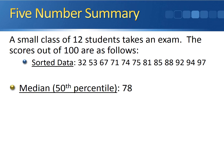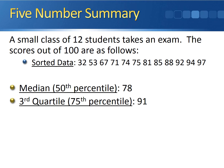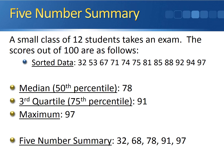The median, which is the 50th percentile, is 78. The third quartile, which is the 75th percentile, is 91. The final number in our five-number summary is the maximum, which is 97. So our entire five-number summary is: minimum 32, first quartile 68, median 78, third quartile 91, and maximum 97.